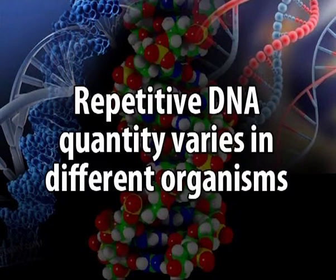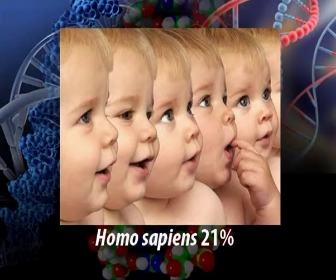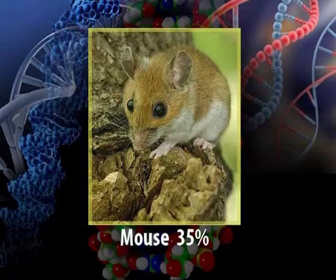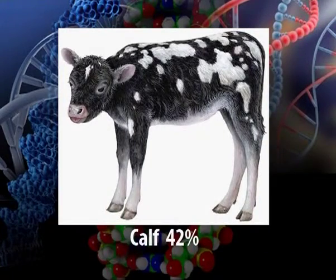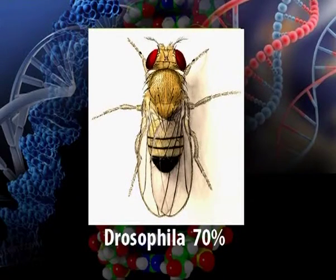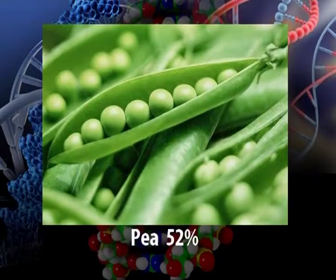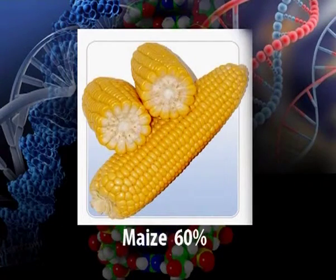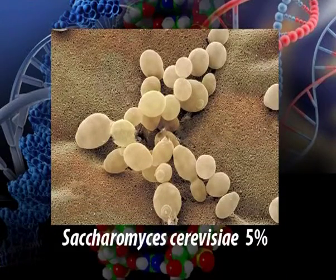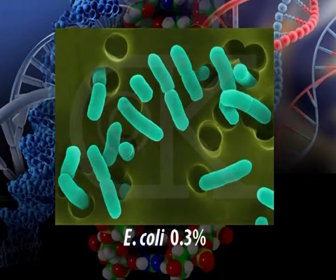The quantity of repetitive DNA varies in different organisms. In Homo sapiens, the percentage of repetitive DNA is about 21%; in mouse it's around 35%; in cow it is 42%. In plants, wheat has 42%, pea 52%, and maize 60%. Fungi such as Saccharomyces cerevisiae, which is a yeast, have about 5% repetitive DNA. Prokaryotes have very little — for example, in E. coli it comprises just 0.3% of the total genome.